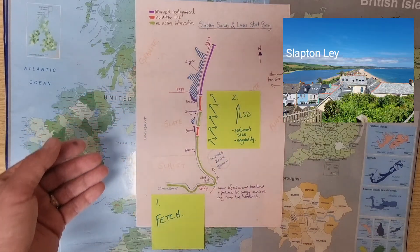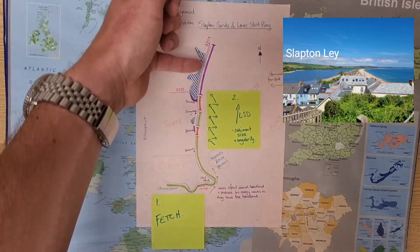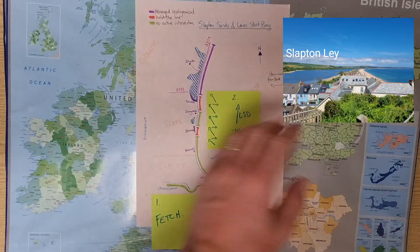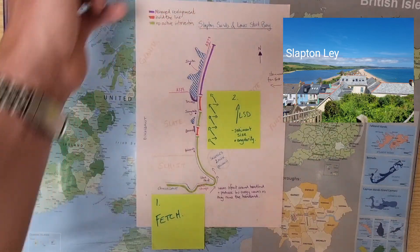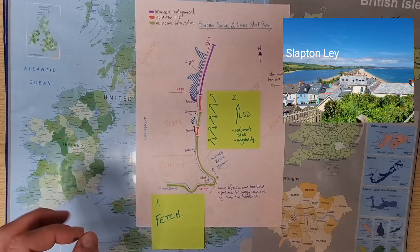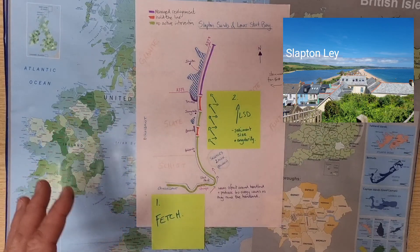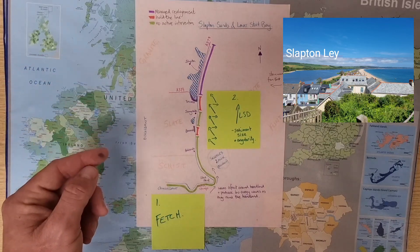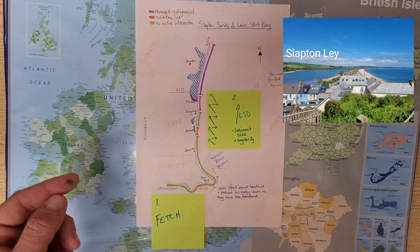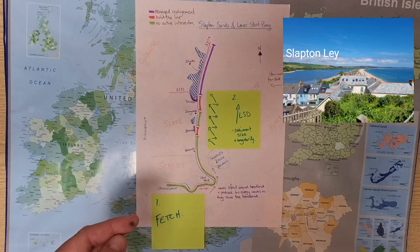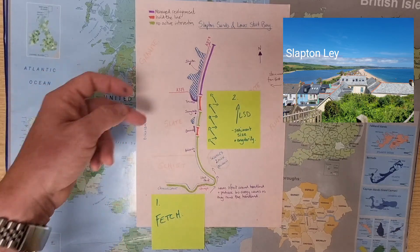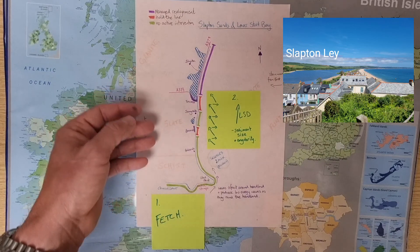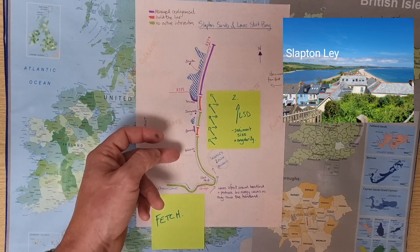Other major physical features to highlight are the Slapton Lee — the lake — which is here in blue, and that is separated from the sea via the barrier beach, a ridge of sand and shingle that sits in between. We also have human features: the A379, which crucially runs along the barrier beach through Torcross then off inland. There is Slapton Village, Torcross, Sunnydale, Bee Sands, and the abandoned Hall Sands.